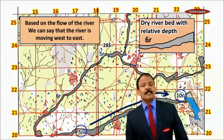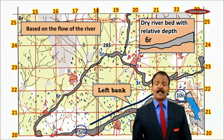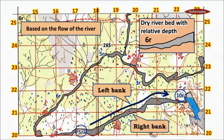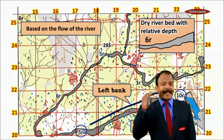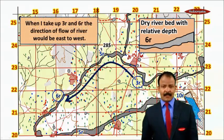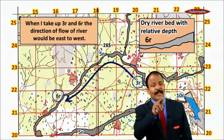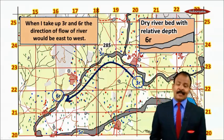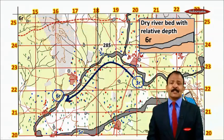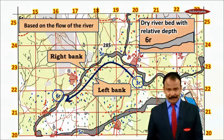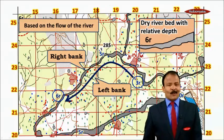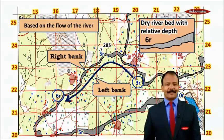Once we understand the flow of the river, we also understand the left bank and the right bank. In another example starting from 3R to 6R, the flow will be in the corresponding direction, and the left bank and right bank will also change accordingly. With this, we conclude this module.